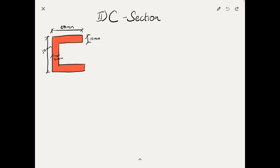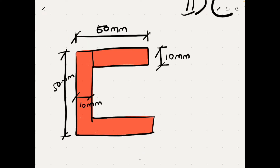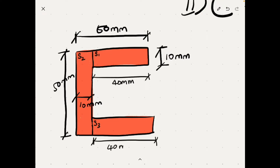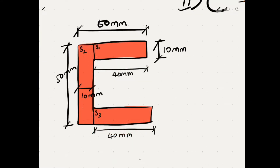To begin, we break the section into regular shapes. We split this into rectangle Section 1, another rectangle Section 2, and Section 3. The breadth of Section 1 will be 50 − 10 = 40 mm, and similarly for Section 3, the breadth will be 40 mm. Now that we have three rectangles, we can calculate the centroid of each individually. The centroid of S1 is exactly at its center, S2 at its center, and S3 at its center as well.